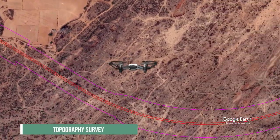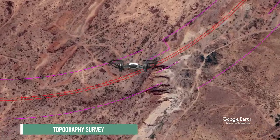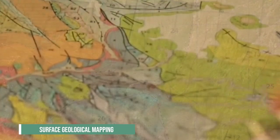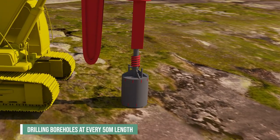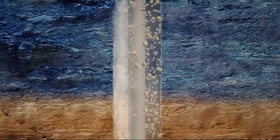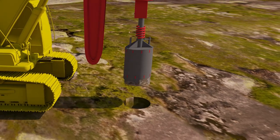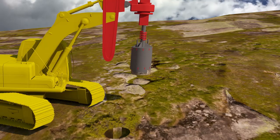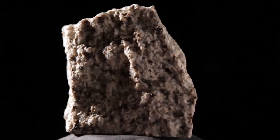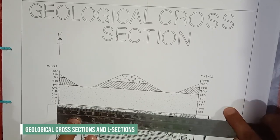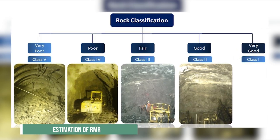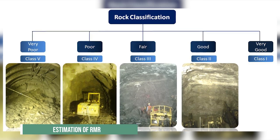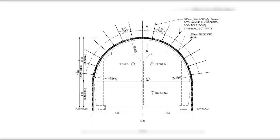A topography survey was carried out for identification of the tunnel alignment and to assess the rock cover over the tunnel crown. Surface geological mapping and preparation of geological maps were undertaken. Subsurface investigation was conducted by drilling boreholes at every 50 meters along the tunnel length, with investigation depth down to the invert level. Samples collected through boreholes were sent to the laboratory for testing and identification of engineering properties of rock, required for design of rock support for individual rock classes.